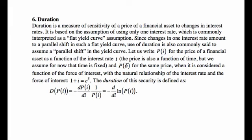Duration of this security is defined as minus the derivative of the price with respect to the interest rate, times one over the price. For a typical bond, a higher interest rate results in a lower price because we're discounting future cash flows at a higher rate. So this derivative is typically negative, and the minus sign is put there to make the whole thing positive.